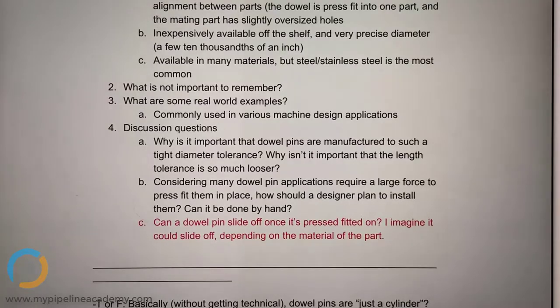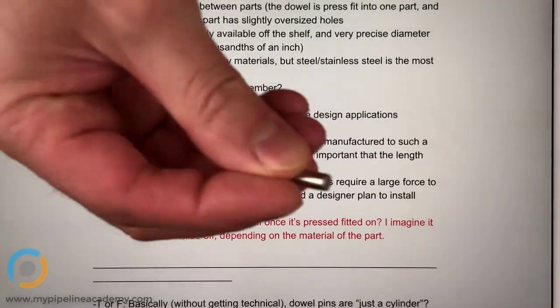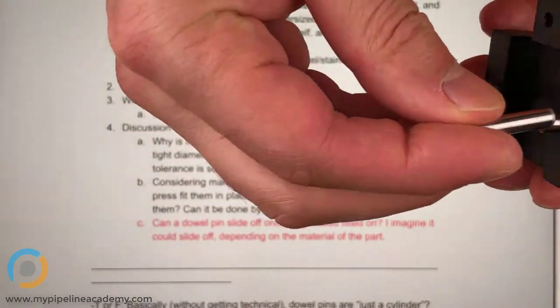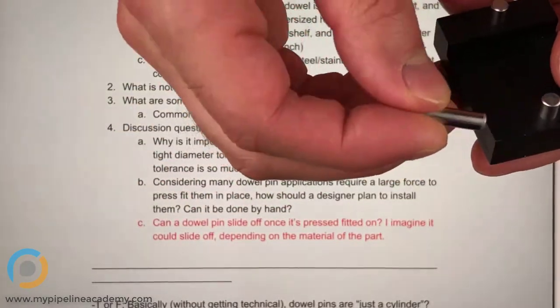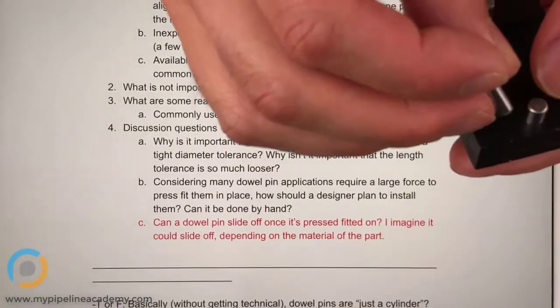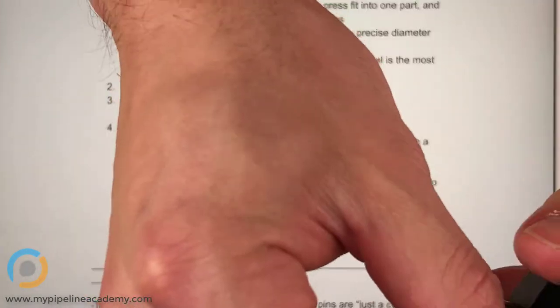I think the answer is because, given that we use dowel pins, we have a hole and we use a press fit. So this went in there, and it has to be very precise for the diameter because it has to create interference for it to stay in there.